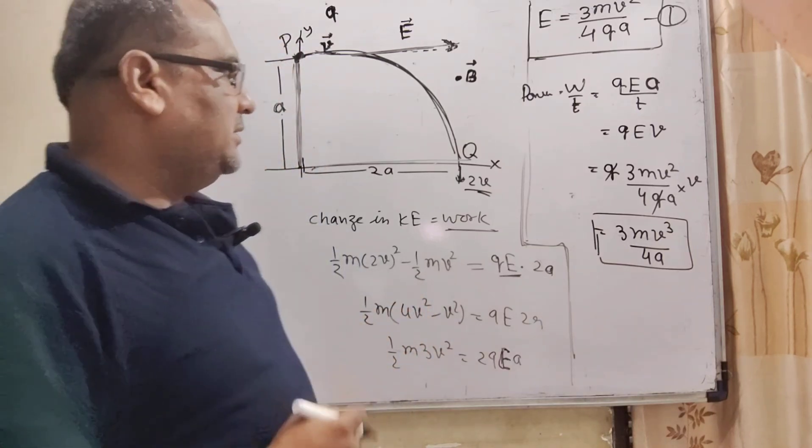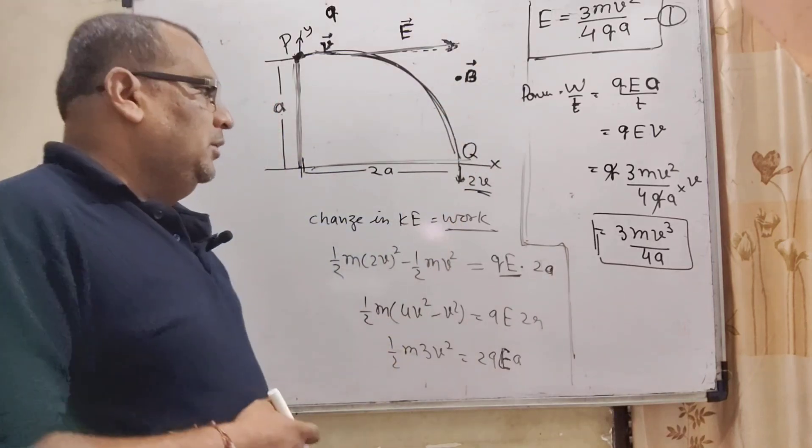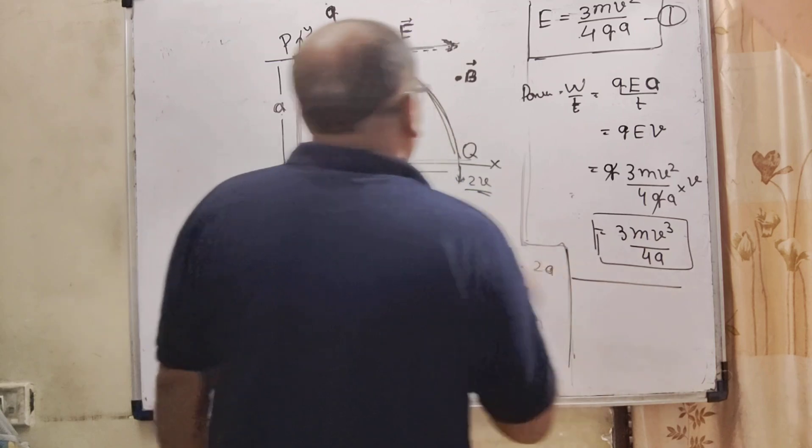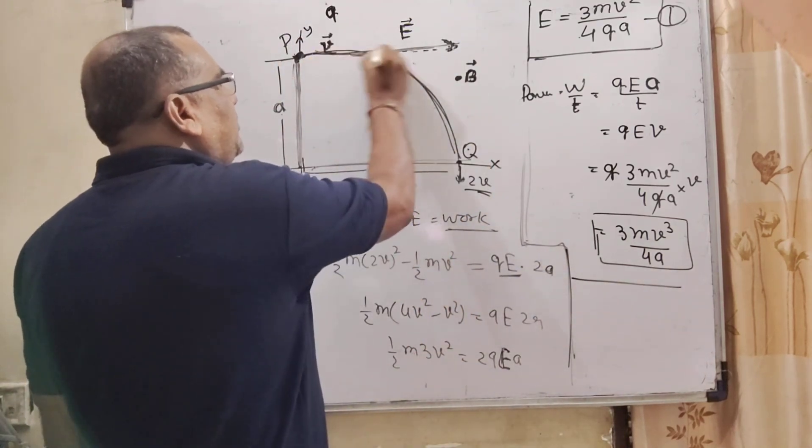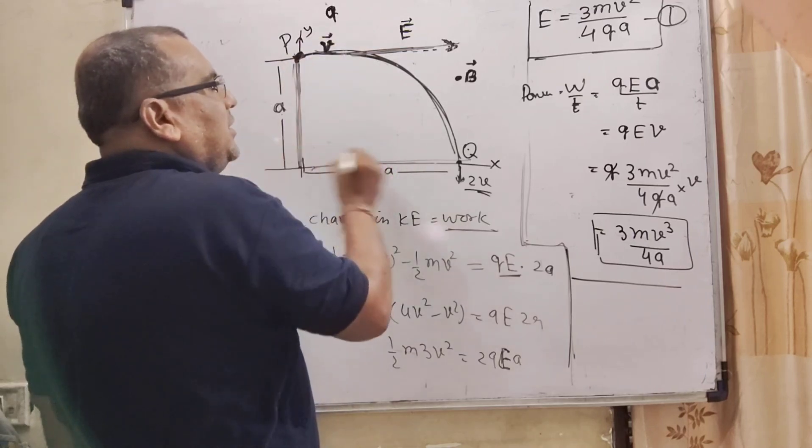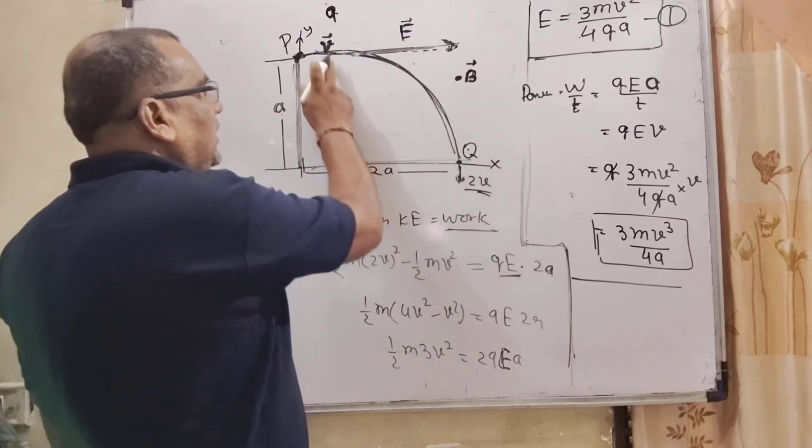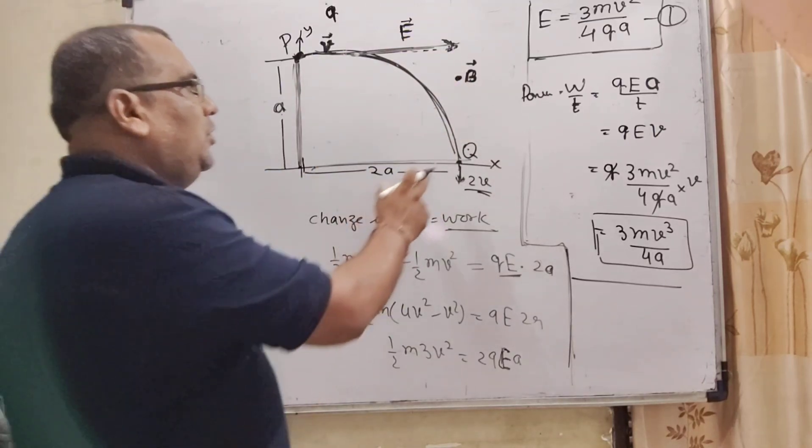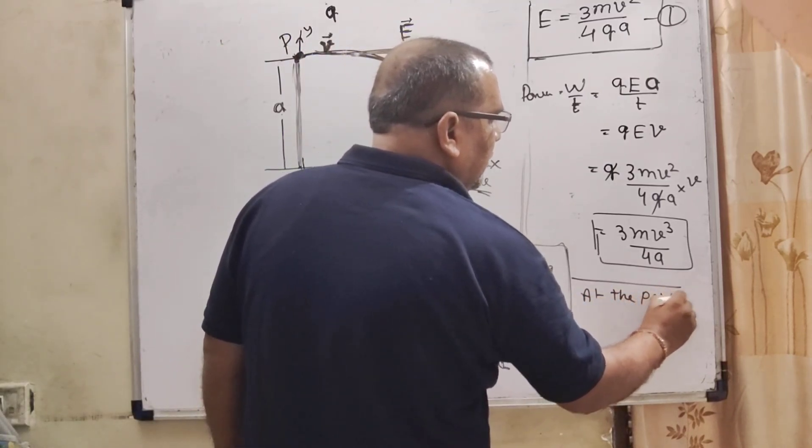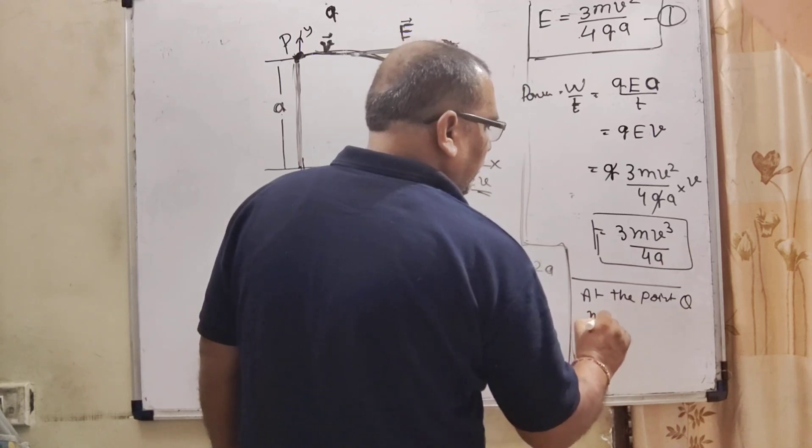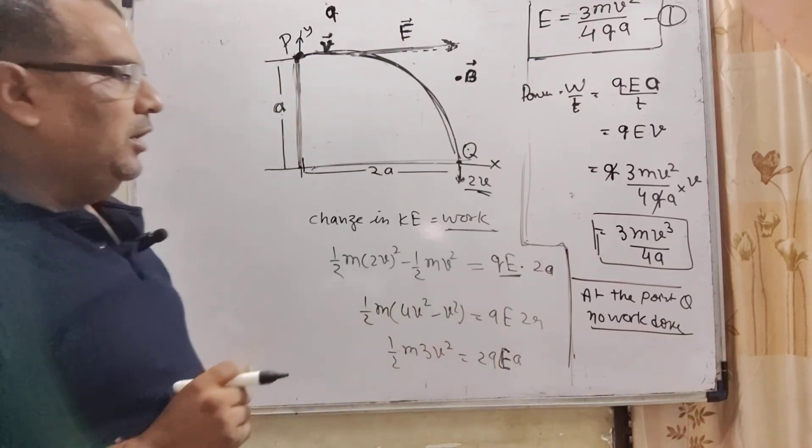And last thing: there is no work done at the point Q due to this particle when it is moving with V velocity. Because in that case, here, E and B are perpendicular. In this case, at the point Q, no work is done. At the point Q, no work done.